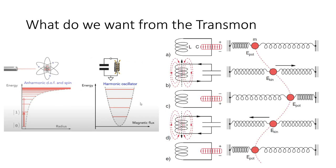So our goal is to have something like on the left — to construct the anharmonicity that we see in the quantum world. We want to modify this harmonic oscillator. Here is a picture of how the harmonic oscillator works: you have the capacitor which is fully charged, then the current goes through it and produces a magnetic field, with an analogy to the mass on a spring.